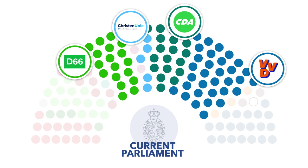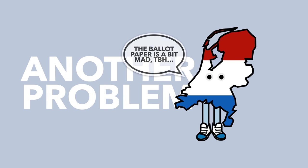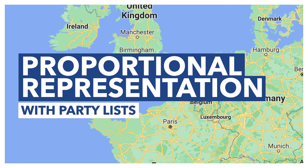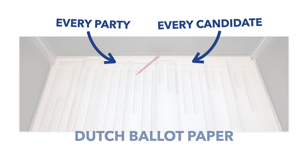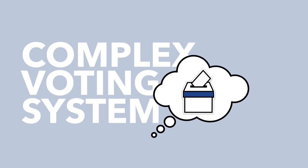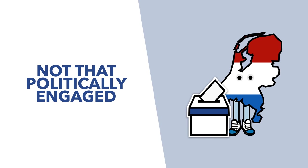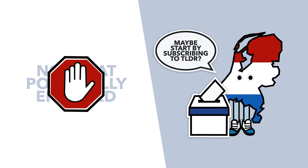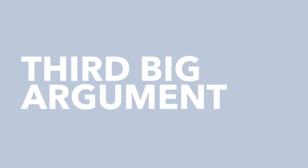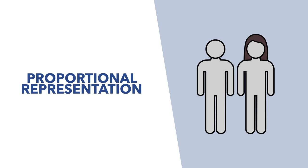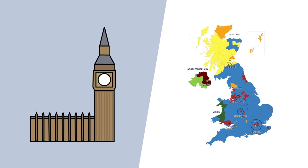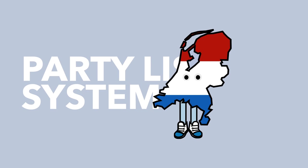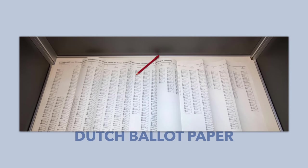Another problem is the unwieldiness of the process. The party-list system produces an ungodly ballot paper, due to all of the parties and candidates from parties needing to be listed. Having such a complex voting system looks great from a theoretical standpoint, but for those who don't dedicate a huge proportion of their time to politics, it can present quite an obstacle to casual participation. A third big argument against proportional representation is that the link between a constituency and the MP will be lost. In the majoritarian system, an MP represents an area known as a constituency. In a PR party-list system, the nation is treated as one big constituency, and it's not always immediately clear who actually represents you.